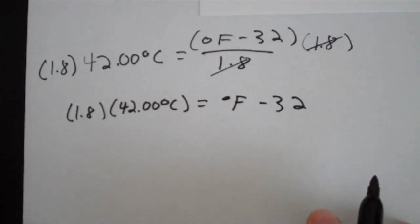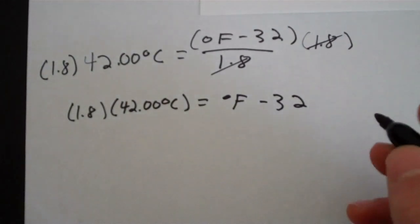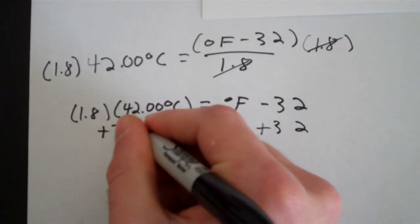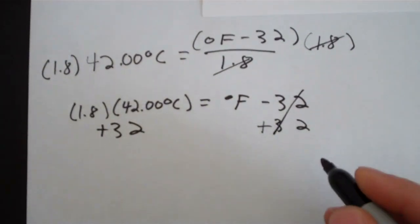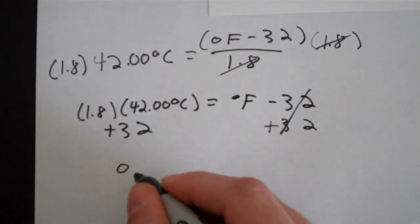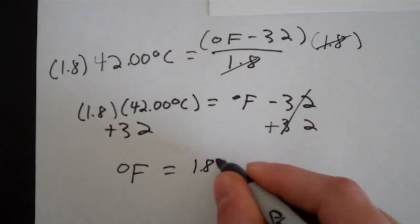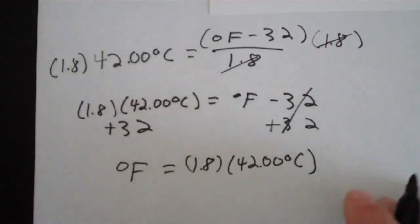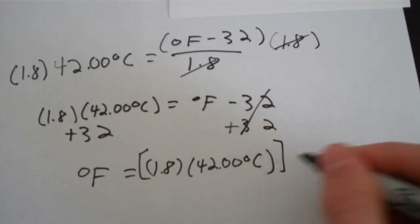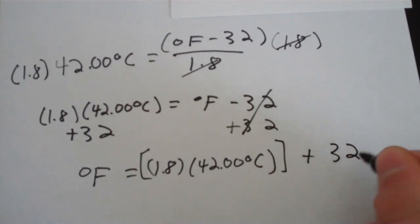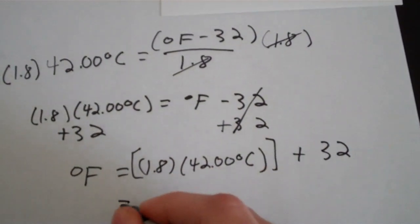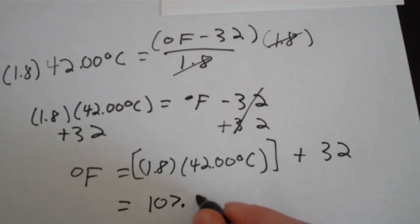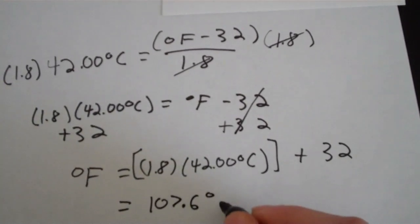Almost done. All we have to do is just solve for degrees Fahrenheit by adding 32 to both sides. These 32s cancel and we're left with degrees Fahrenheit equals 1.8 times 42.00 degrees Celsius, that whole quantity plus 32.00. And if you put that into your calculator, you'll get 107.6 degrees Fahrenheit.